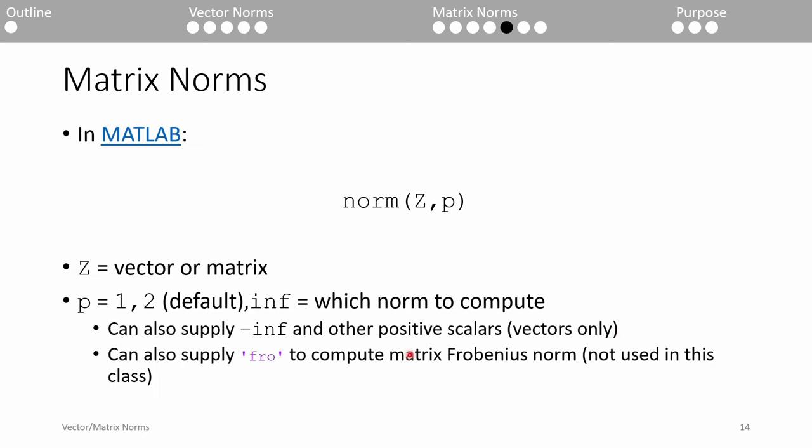For matrices, you can set P to the string FRO to calculate the Frobenius norm, which is another special norm type that's beyond the scope of the class.